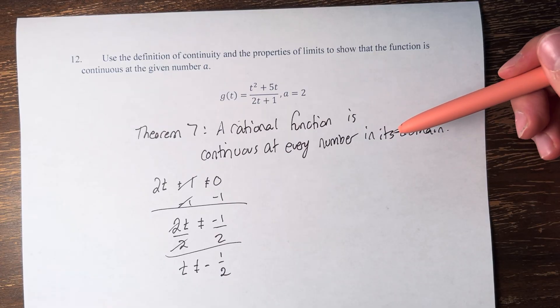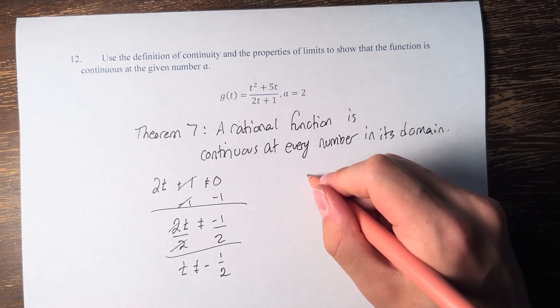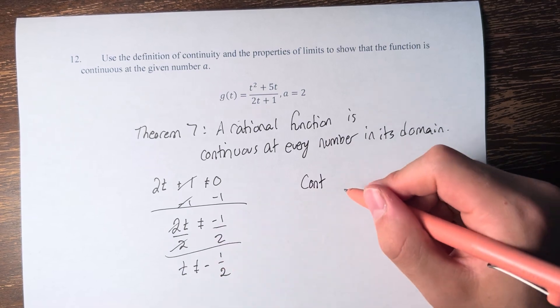But at every other number, we can say that the function is continuous. Therefore, at a equals 2, since it's not negative 1 half, we can say that the function is continuous.